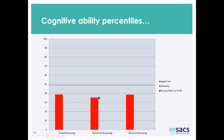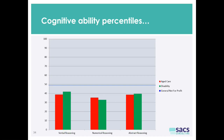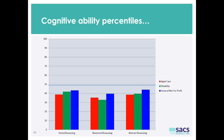Abstract reasoning is to do with general problem solving such as seeing the sequence in things, and it's also the capacity to anticipate what's likely to happen. The red ones are for the aged care sector, the green ones are for the disability sector, and the blue ones are for the general not-for-profit sector.